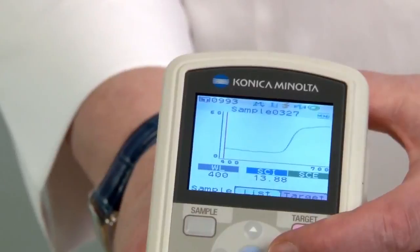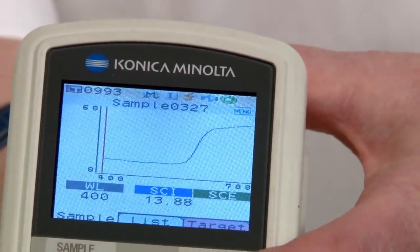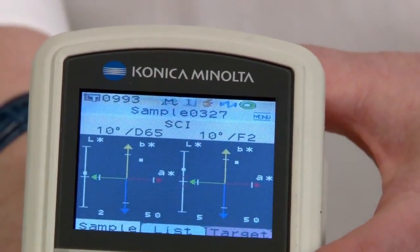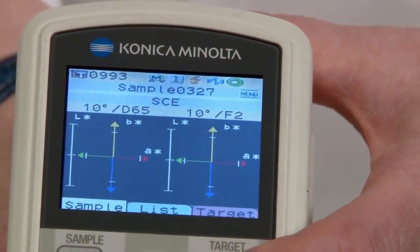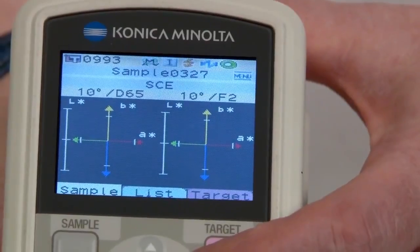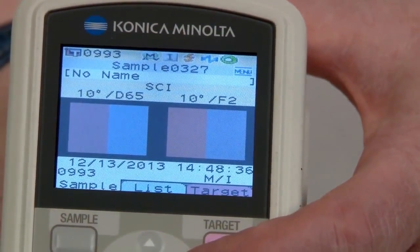During each measurement, data for specular components included and excluded are taken simultaneously to analyze the surface conditions, such as texture and gloss.